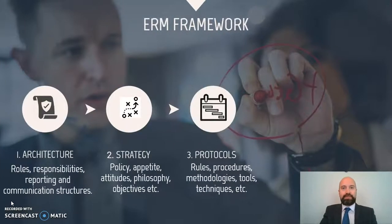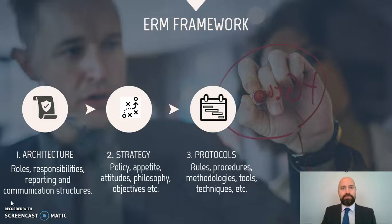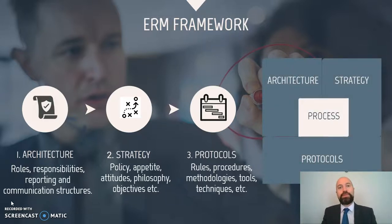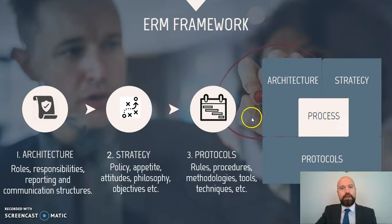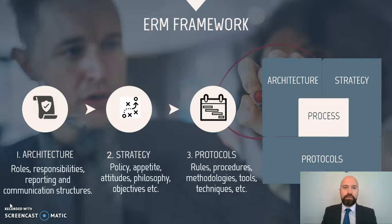Let's begin with the framework. The enterprise management framework is made of three basic elements which are the architecture, strategy and protocols. All three elements together form the basis of the framework, whose main objective is to support the implementation of the risk management process, as shown in this picture. Other objectives of the enterprise risk management framework would be to allow the flow of data and information across the process, and also to enable the delivery of the objectives and benefits explained in the first half of this video.